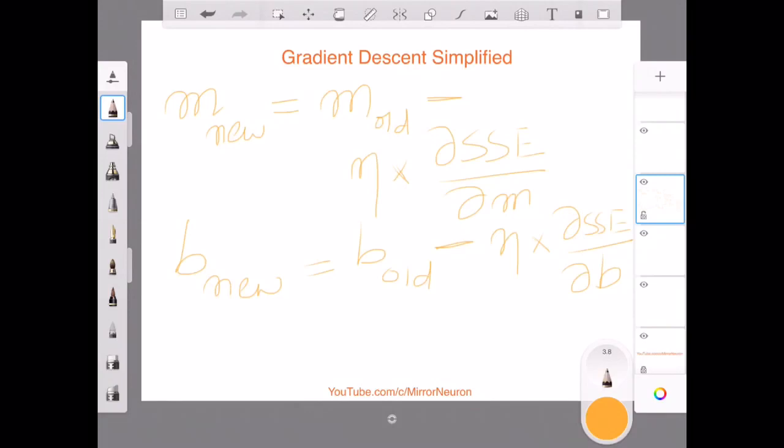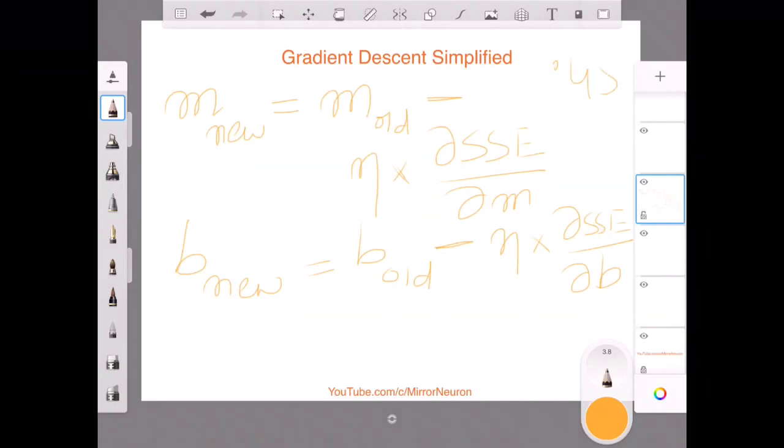So these are the two new values of m and b that we are going to use. So let us go back to our Excel spreadsheet and recalculate all these values. We know that m old is 0.45 and b old is 0.75. So now we are going to update this value, also known as update the weights in terms of machine learning. Let us go to the Excel spreadsheet.